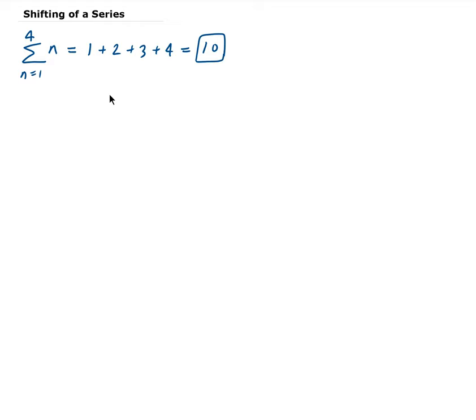So we can come up with the same value. We can preserve the original series by doing a shift. So if we subtract 1 from n, let's say we start from 0. If I subtract from here, I have to subtract from the top as well. So whatever amount that I subtract, we have to add that same amount to n. So this should give us 10. Let's check. When n is 0, we get 1. When n is 1, we get 2. When n is 2, we get 3. When n is 3, we're going to get 4. So we also get 10.